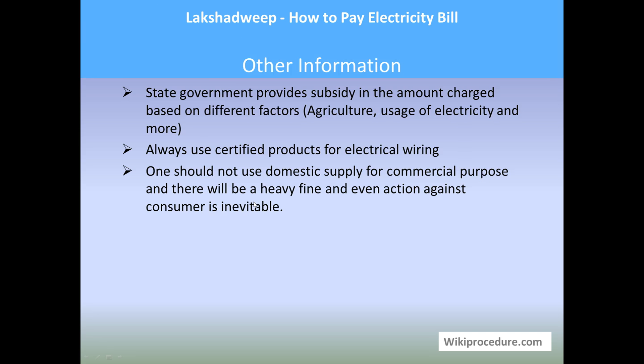Other information: the state government provides subsidy on the amount charged based on different factors, from agricultural to other subsidy-based industries. Always use certified products for electrical wiring. One should not use domestic supply for commercial purposes — it is an offense and action against the consumer is inevitable. Hope this video helped you. Don't forget to give us a like and subscribe for more videos. Thank you for visiting wikiprocedure.com to know how to pay electricity bill in Lakshadweep.